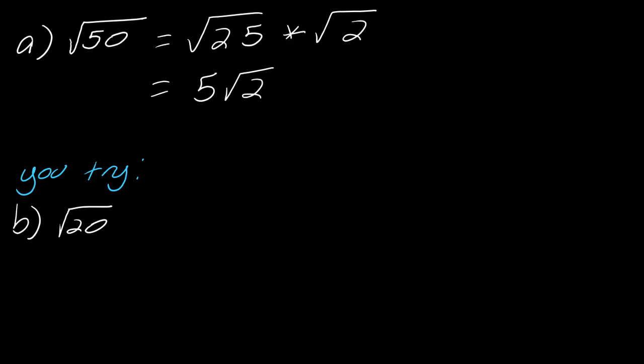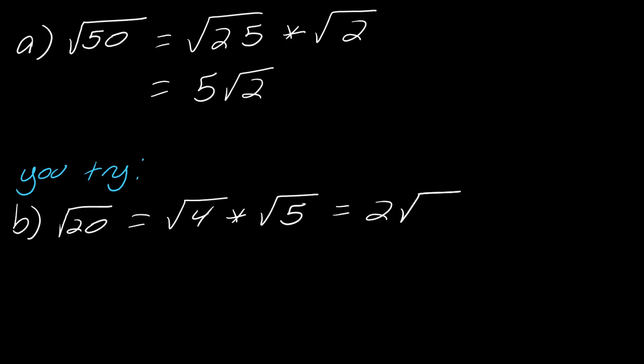So why don't you go ahead and try the square root of 20? So once again, referring to that list of squares, the largest square that would divide into 20 is 4. So this is going to be the square root of 4 times the square root of 5, so this is going to equal 2 root 5.